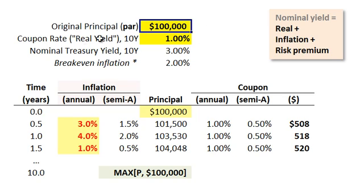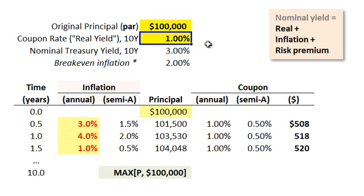The TIPS attaches with a fixed coupon rate, also called a real yield. I looked that up, and for the 10-year, that is pretty close to 1%. I've rounded numbers just to keep the example simple. So our real yield is 1%.